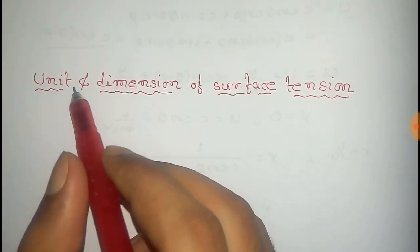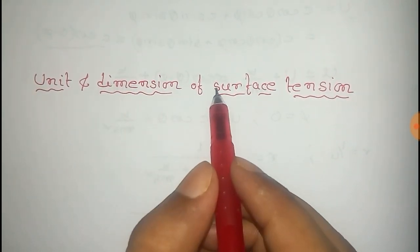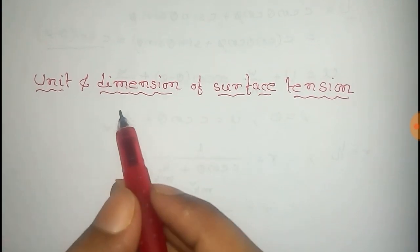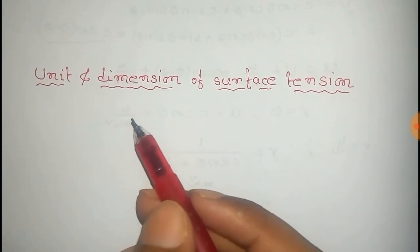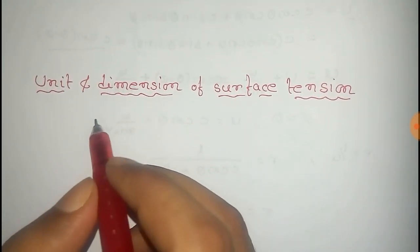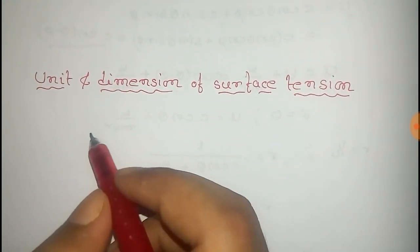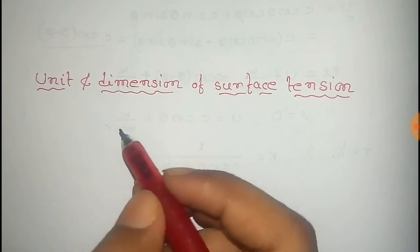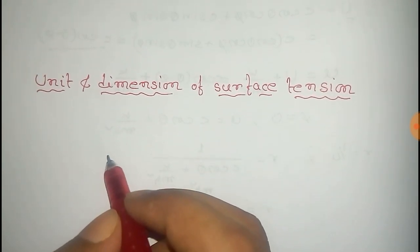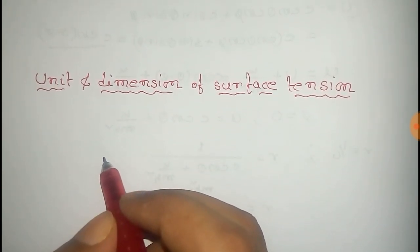In this video you will find the unit and dimension of surface tension. So first of all, what is surface tension? It is the property of fluid in which the surface of liquid is stretched by the neighboring molecules. It's equal to the ratio of force applied on the liquid surface to the length.